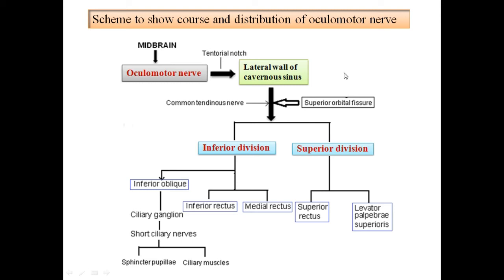The oculomotor nerve emerges from the ventral aspect of the midbrain at the level of the superior colliculus, then enters through the tentorial notch of the tentorium cerebelli to reach the lateral wall of the cavernous sinus. From there, the nerve enters the orbit through the superior orbital fissure inside the common tendinous ring. After exiting the superior orbital fissure, the nerve divides into a superior division and an inferior division. The superior division supplies the superior rectus and levator palpebrae superioris. The inferior division supplies the medial rectus, inferior rectus, and inferior oblique muscle. Fibers from the inferior oblique pass through the ciliary ganglion, contributing to the short ciliary nerves, which supply the sphincter pupillae and the ciliary muscle.